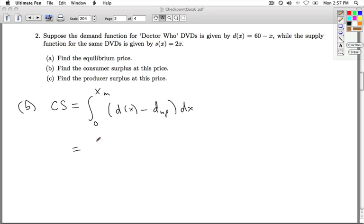So our market demand at equilibrium is 20, so I'm integrating from 0 to 20. The D(x) is the 60 minus x, minus the price, which we learned was 40.